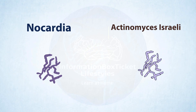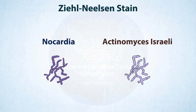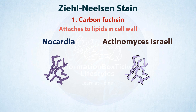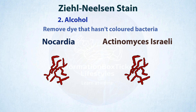To differentiate them, an acid-fast stain, also known as the Ziehl-Neelsen stain, is used. In this test, a red dye called carbol-fuchsin attaches to lipids in the cell wall and turns them red. Then alcohol is used to remove any dye that has not colored the bacteria, and a second dye, methylene blue, is added.